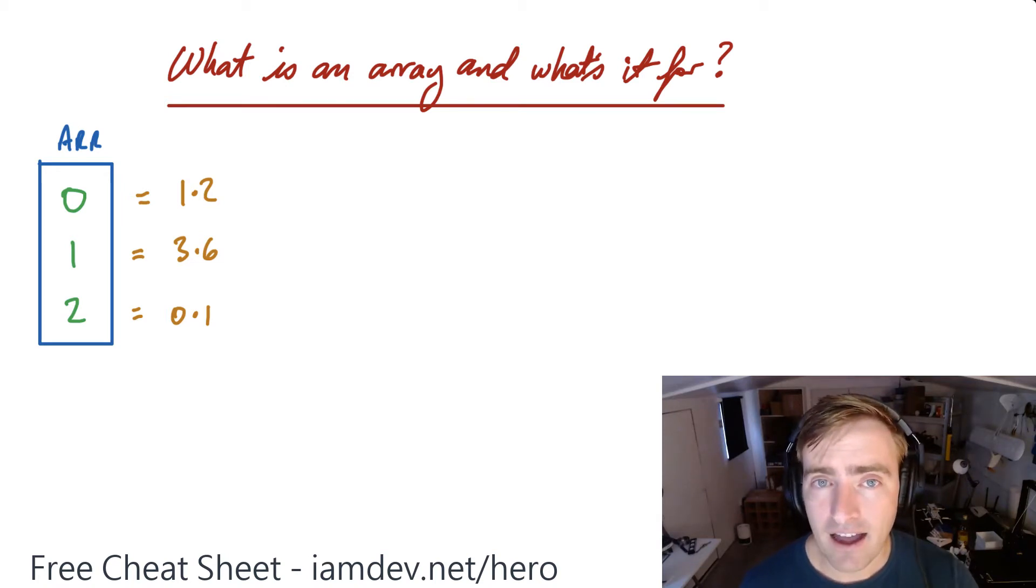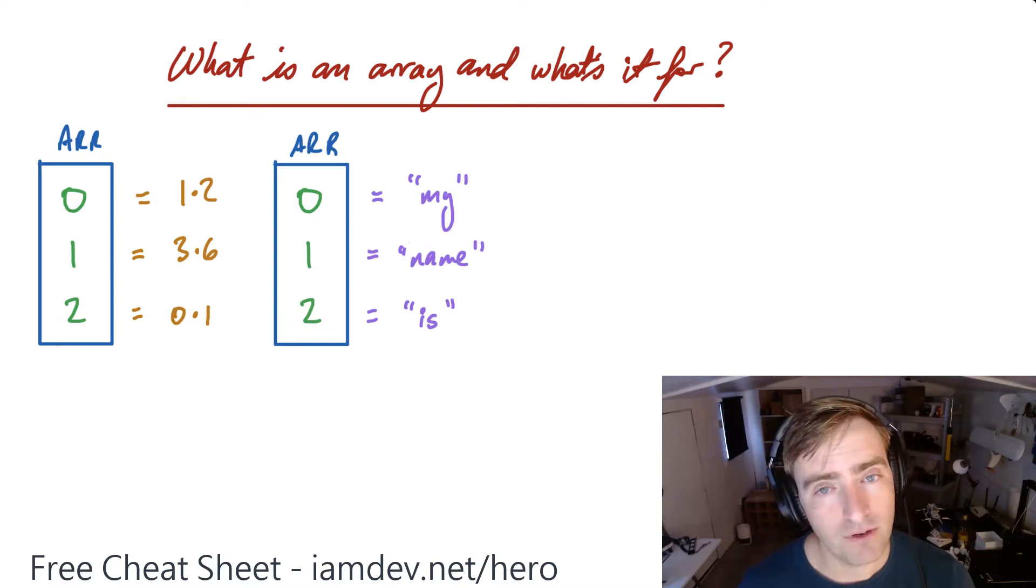An array can hold any type of thing, but usually only one type can be held across the whole array. So you can also have strings: 'my', 'name', 'is', for example.